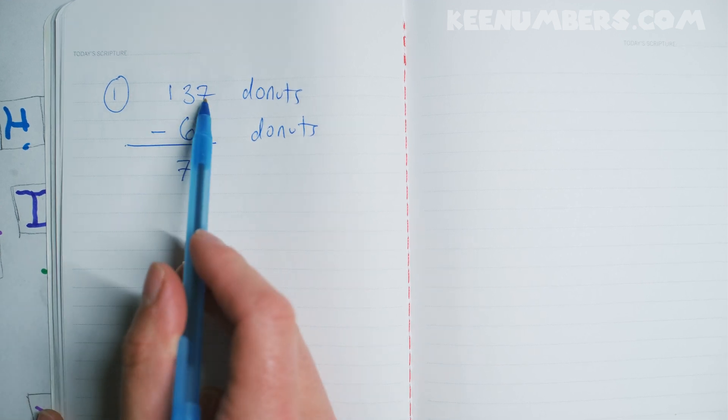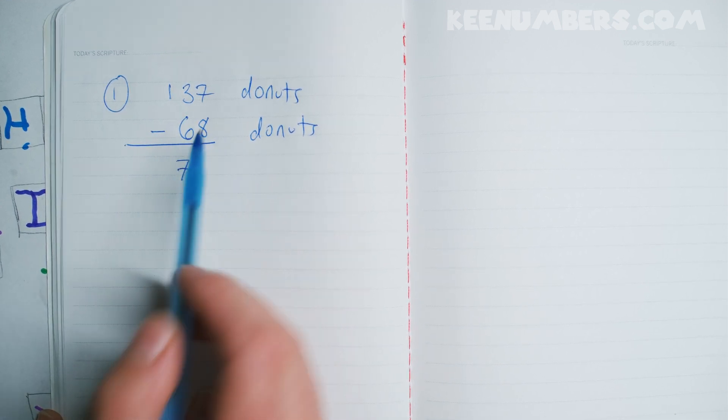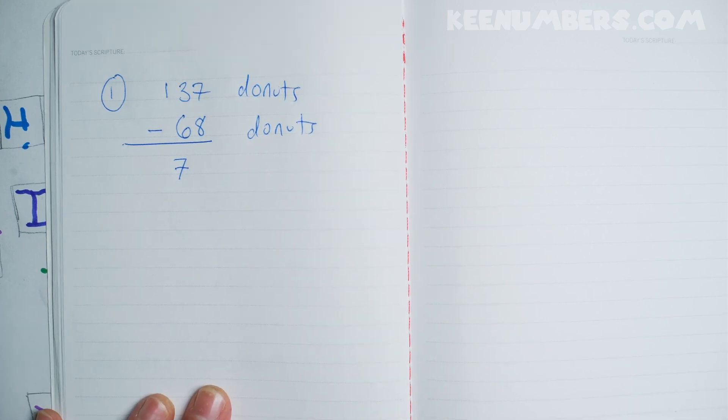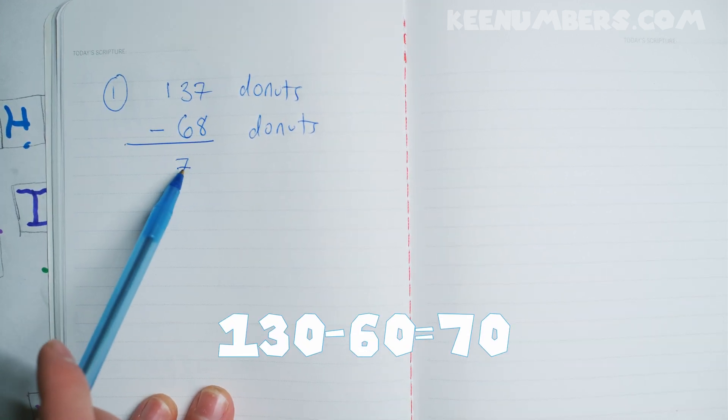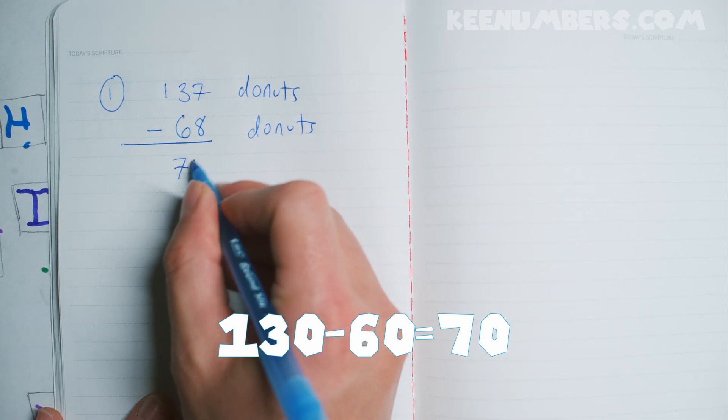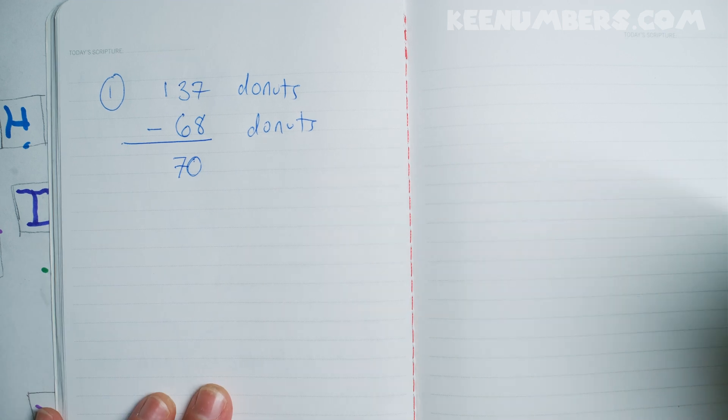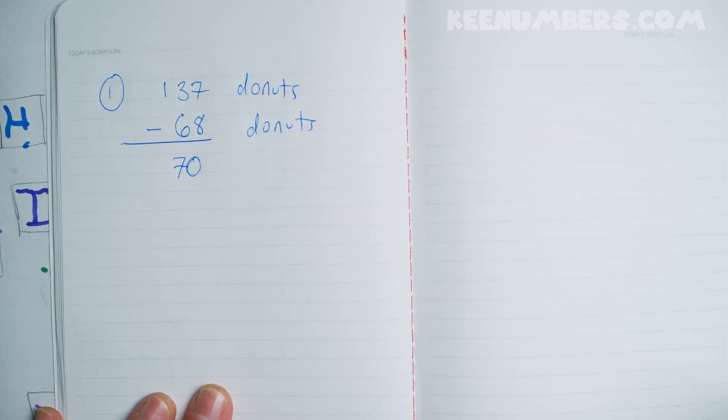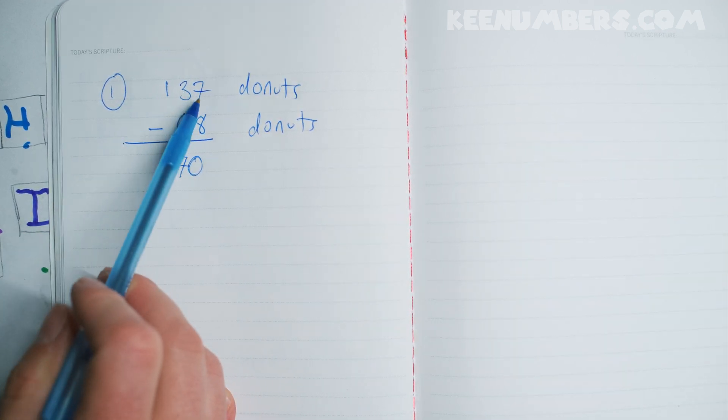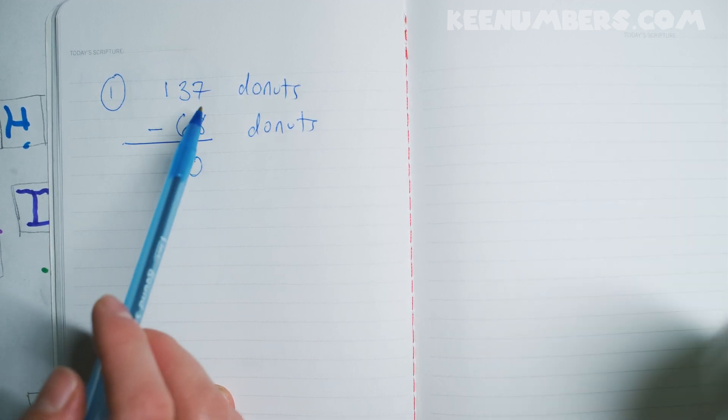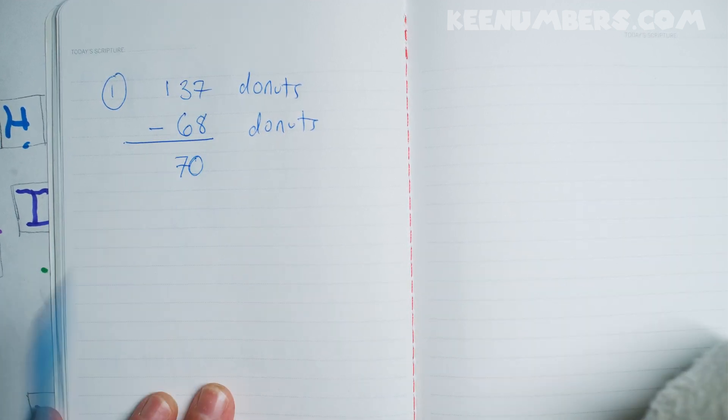Alright, Pirate Sam. What's 7 minus 8? 7 ones minus 8. And really, this is 130 minus 60, so we got 70 here. But now we're gonna look at 7 minus 8. I don't know. Again, we have 130 donuts minus 60 donuts. That's 70 donuts. I don't know. But now, what's 7 minus 8 donuts?